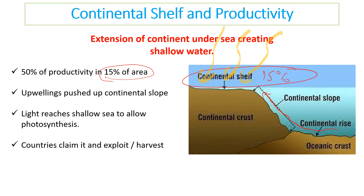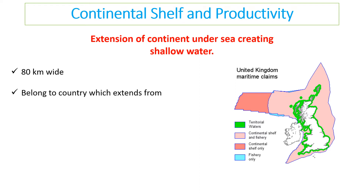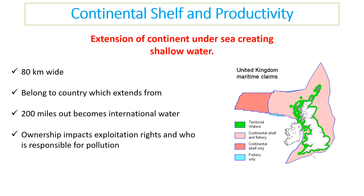As a result, countries want to exploit the continental shelf because there are lots of fish and animal life there to harvest. Effectively, the rule is that the country next to a continental shelf owns that bit of sea. The continental shelf is up to 80 kilometres wide around countries and belongs to the country it extends from. At 200 miles out to sea it becomes international water, which impacts ownership, exploitation rights, and creates challenges around pollution — since it becomes a joint venture to clean up.